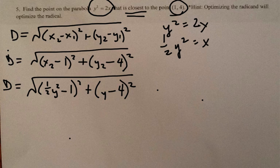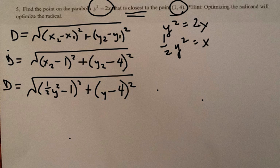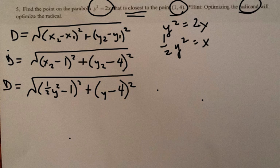This is a mega chain rule problem. The hint — optimizing the radicand will optimize the radical — means if I make the number under the root as large or small as possible, the root itself will be as large or small as possible. So we ignore the root and work with just the radicand when taking the derivative. You could do the full chain rule and get the same answer, but this simplifies the problem. So the derivative of d with respect to y, totally ignoring the root, applies the chain rule to each squared term, multiplying each by the derivative of the inside function.